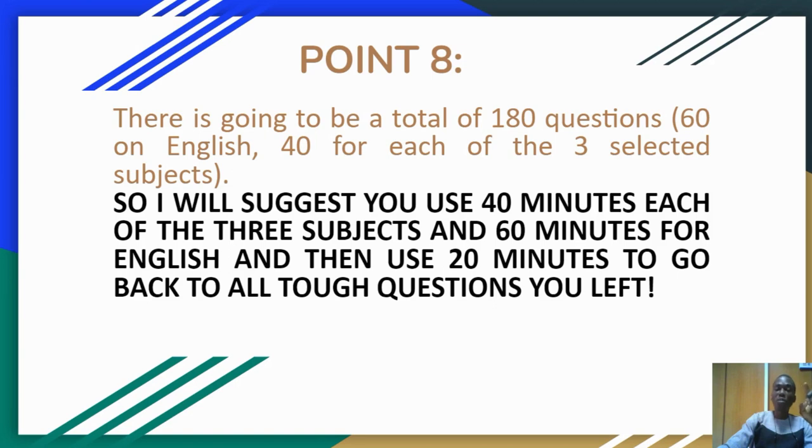If you are given 180 questions, I will suggest you use 40 minutes each for the three subjects. If you are taking physics, chemistry, and biology, spend 40 minutes in physics, 40 minutes in chemistry, 40 minutes in biology, and finally spend your 60 minutes for English. This would be a total of 180 minutes.